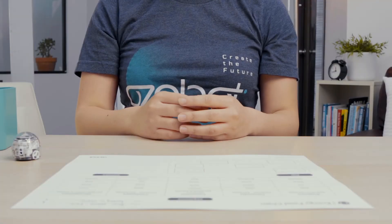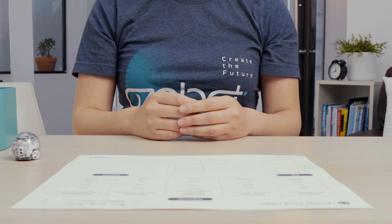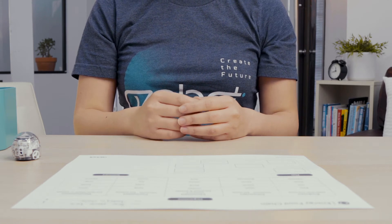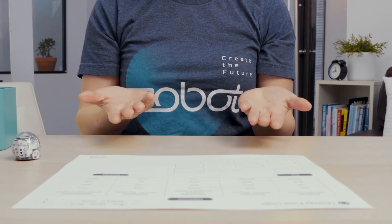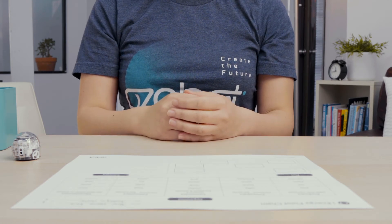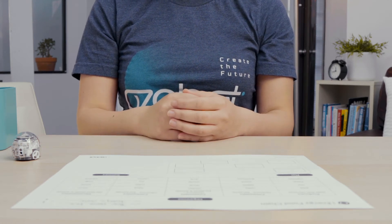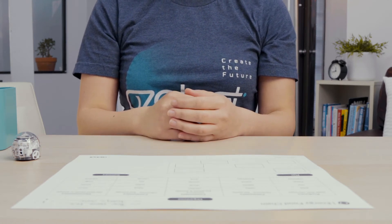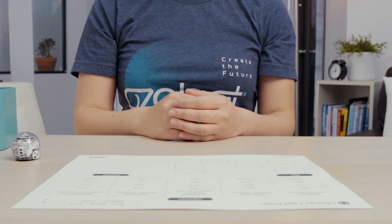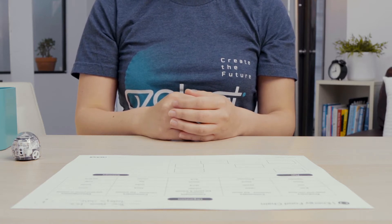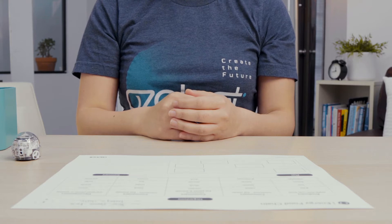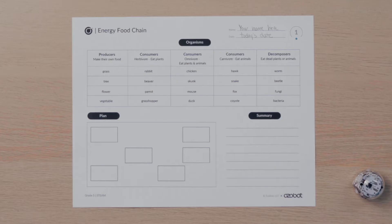Are you ready to make a model of a food chain? A model is a representation of an object, person, or system. Your model will show the movement of energy in an ecosystem, or community of living things. Let's begin by looking at the list of organisms on the energy food chain activity sheet. You will choose four or five organisms from the chart.